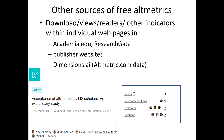You can also access free altmetrics from several sites that give altmetrics inside a page of information about the article, such as Academia.edu and ResearchGate — showing reads, recommends, followers, and citations. Publisher websites sometimes report altmetrics, often from altmetric.com, or from PlumX if it's from Elsevier. Dimensions.ai also reports altmetric.com data for articles in that database. So there are lots of different sources for individual article altmetrics.